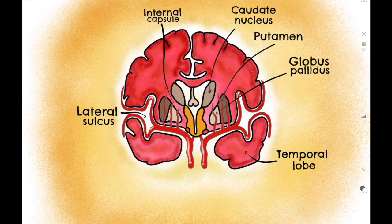The basal ganglia include the caudate nucleus, located superiorly on this image, the globus pallidus, located most medial from the lateral sulcus, and the putamen. The globus pallidus and putamen are often grouped together and referred to as the lentiform nucleus.